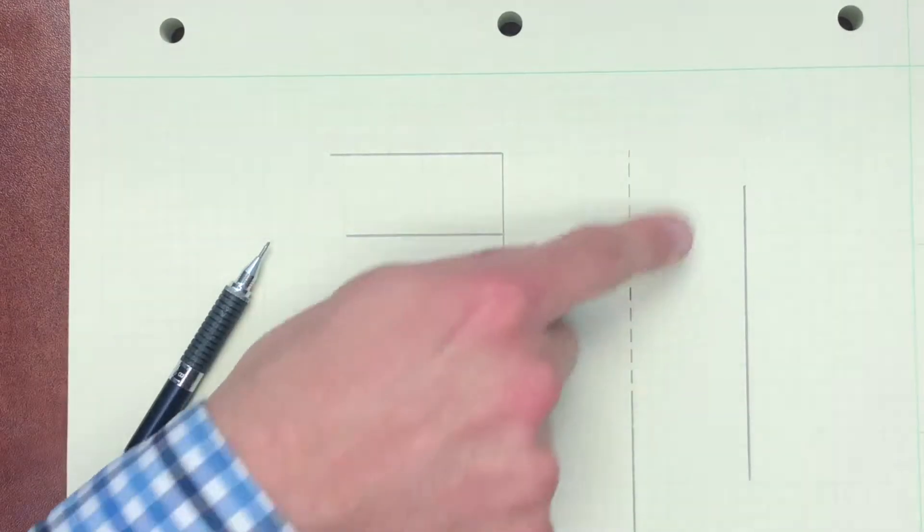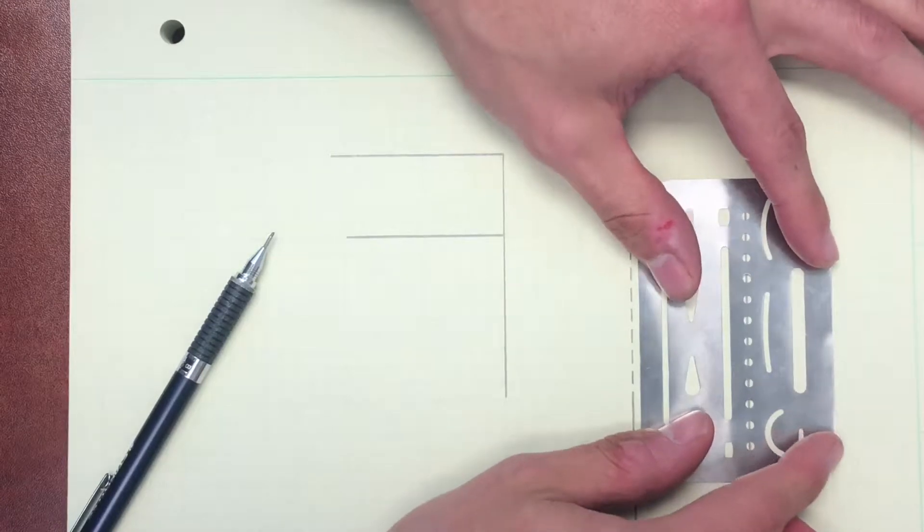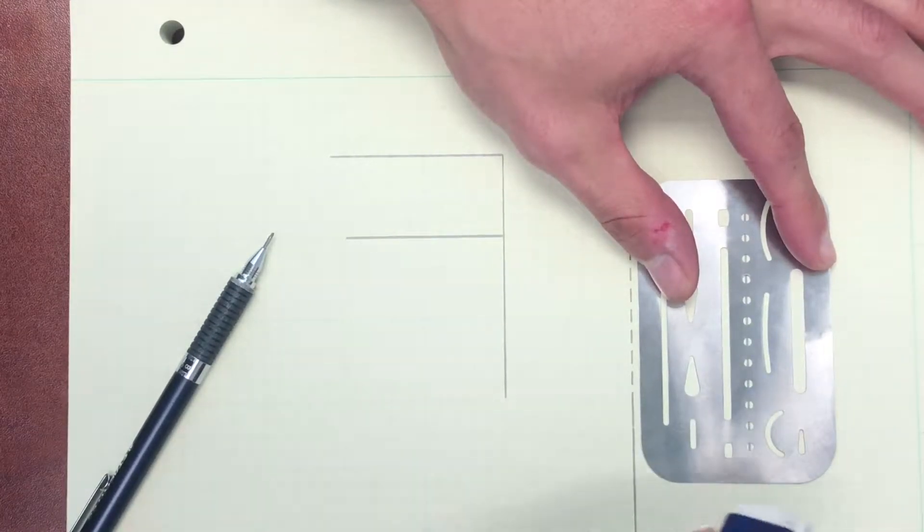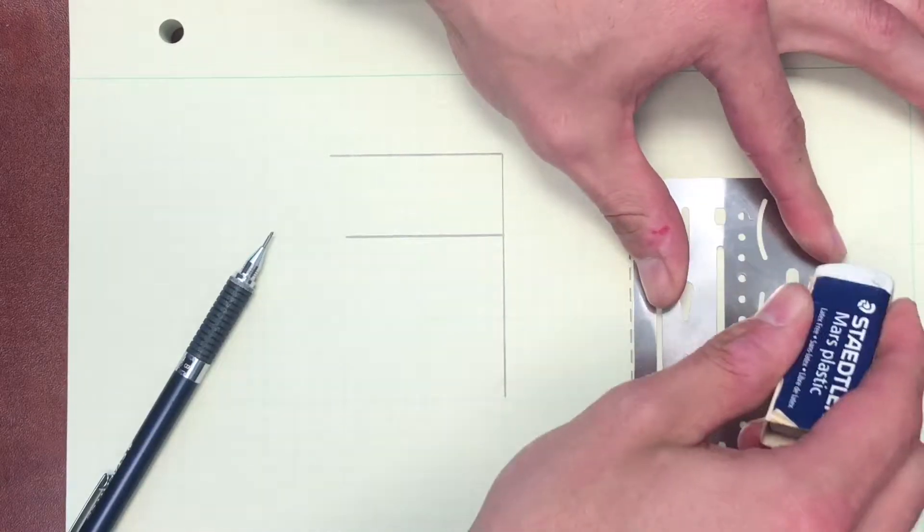So we could also make a centerline. Let's make this one a centerline if I use the same dots there. But instead of erasing every dot, I'm just gonna erase every two. So I'm gonna grab two little dots right there.